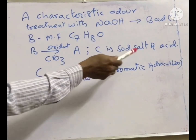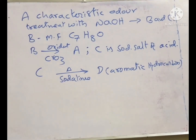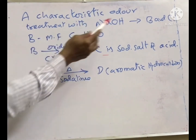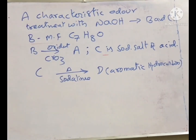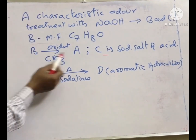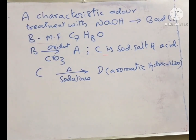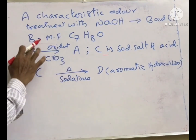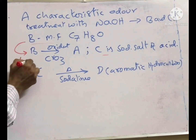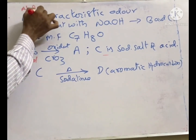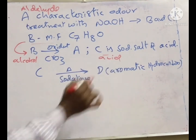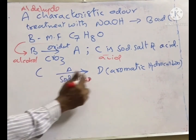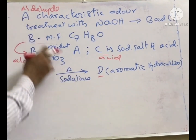In a Cannizzaro reaction, the aldehyde gets oxidized and reduced. If C is the sodium salt of the acid, then B should be an alcohol. B upon oxidation gives A, which confirms this — alcohol on oxidation gives aldehyde. So A is an aldehyde, B is an alcohol. C upon heating with soda lime gives compound D, which is an aromatic hydrocarbon. So everywhere we can have an aromatic group.